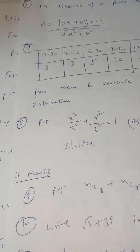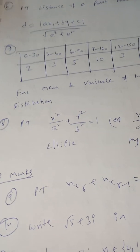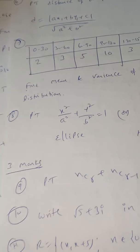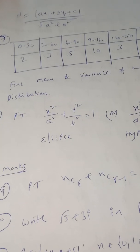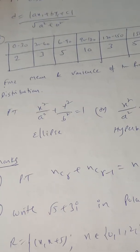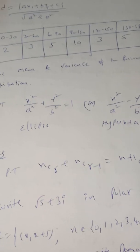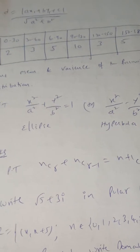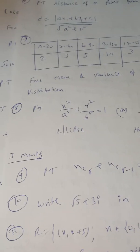Now coming to 3-mark questions. In permutation and combinations, one 3-mark question is: prove that ⁿCᵣ + ⁿCᵣ₋₁ = ⁿ⁺¹Cᵣ. It is a small but very very important proof in the permutation and combination chapter.